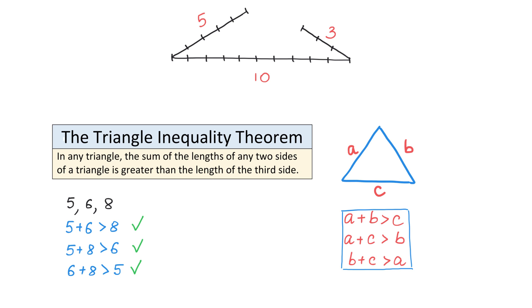But now, let's check if we can draw a triangle using the sides 10, 5, and 3. Let's write them down. 10, 5, and 3. Then, we will start by adding 10 and 5. 10 plus 5 is 15, and this is definitely greater than 3.